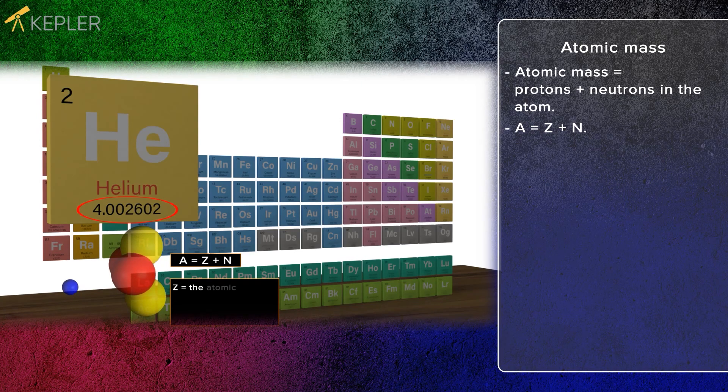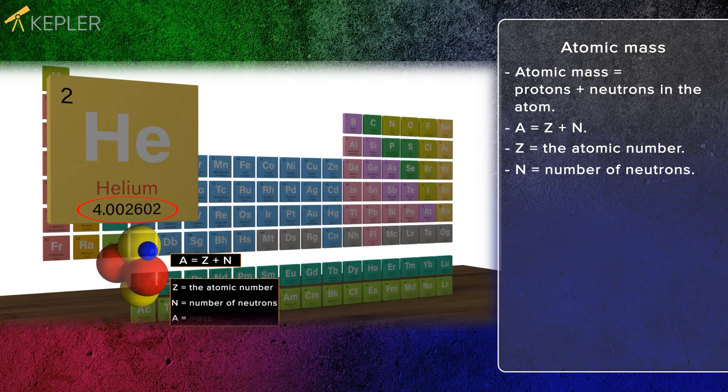Z equals the atomic number. N equals number of neutrons. A equals mass number.